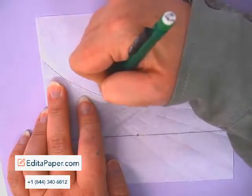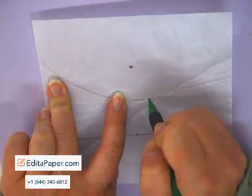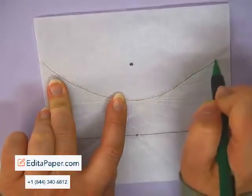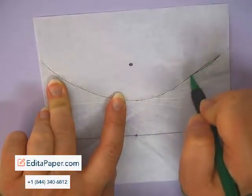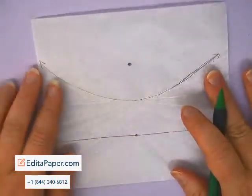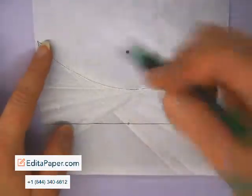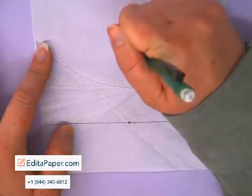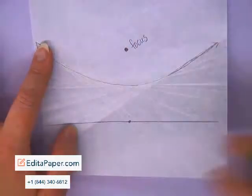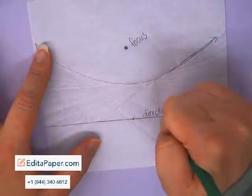So all of these points along here, you can see it kind of looks like the string art you did in elementary school. That has created a parabola based on our definition of all points that are equal distant from a point called the focus and a line called the directrix.